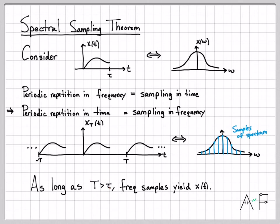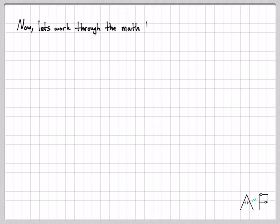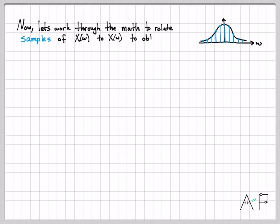We can still see our original x(t) sitting there in the periodic signal — just like in the frequency domain when repetitions of the original spectrum were present, we could see the original spectrum. Now let's work through the math to relate the samples — these blue quantities — of the spectrum x(omega) to the actual spectrum x(omega), and come up with our spectral sampling criteria: an inequality that tells us how to sample in the frequency domain appropriately to capture all the information.